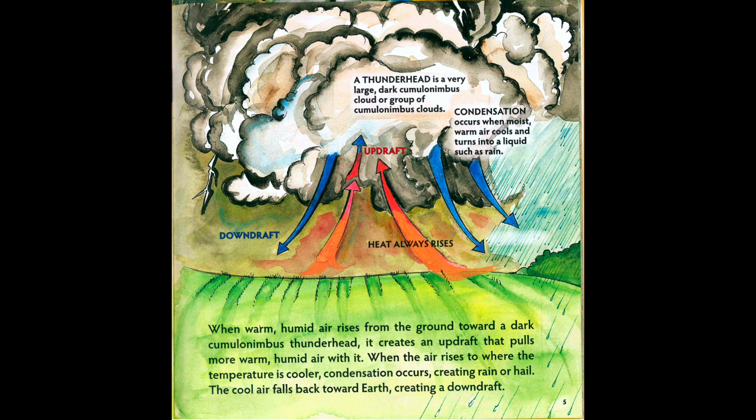A thunderhead is a very large, dark cumulonimbus cloud or a group of cumulonimbus clouds. Condensation occurs when moist, warm air cools and turns into a liquid, such as rain.